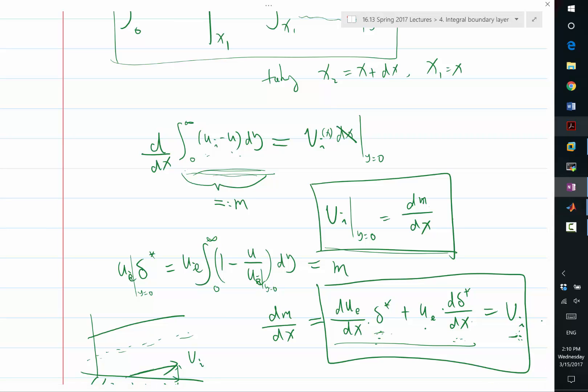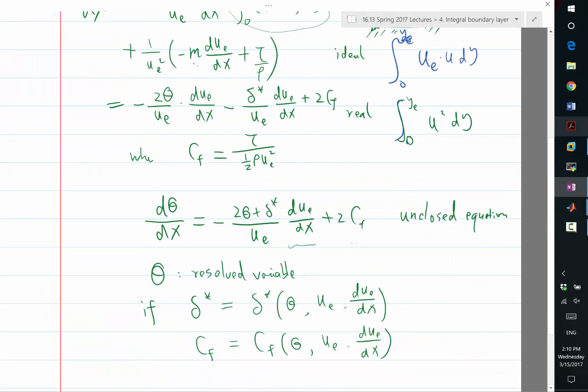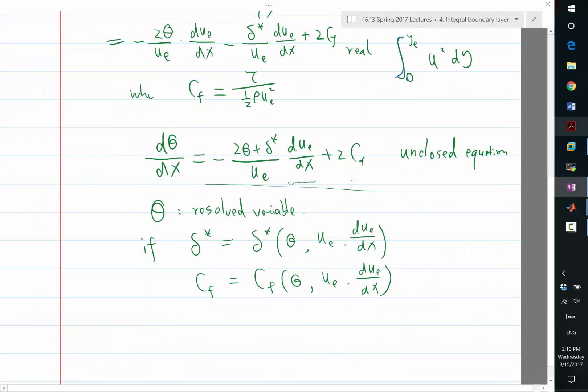In order for the inviscid flow solver to solve this equation, it needs boundary conditions. And for boundary conditions, I need the vI. In order for me to have the vI, I need the delta star. In order for me to have delta star, I need theta. And in order for me to have theta, I need to solve for this equation to get it. And in order for me to have this equation, I need my ue. So this completes the full circle.